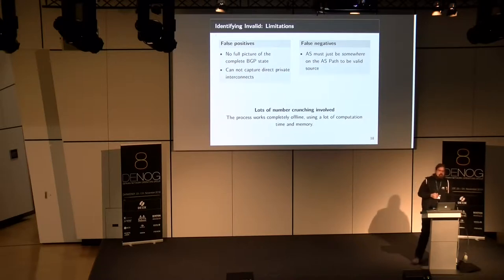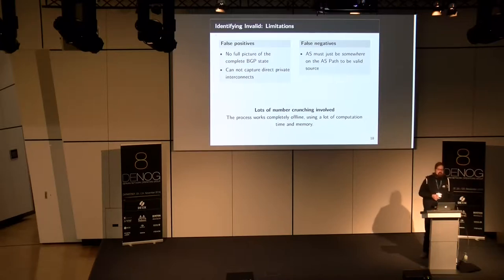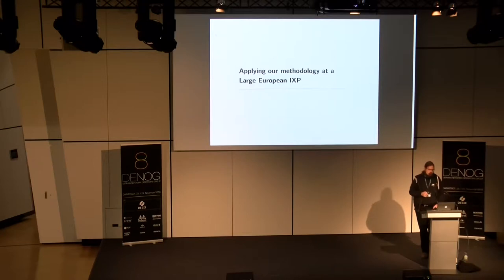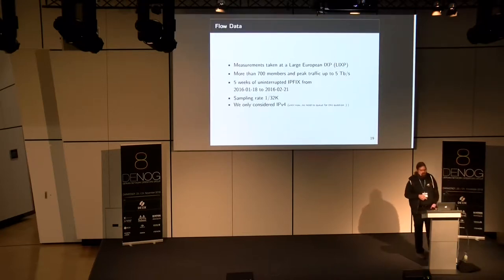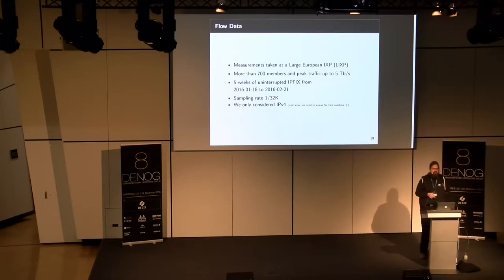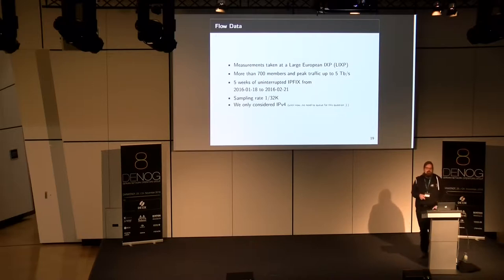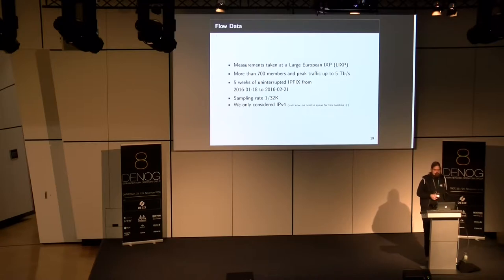We are collaborating with a large European IXP, and we used the metadata — specifically the source IP address from the flow data — and matched it against our categories. The IXP has more than 700 members and a lot of traffic. We looked at five weeks of flow data from January to February this year, considering only IPv4. We looked at sampled traffic because a full capture would be too much, so we have to be careful with some data due to missampling with small members, but for our purpose this is completely fine.